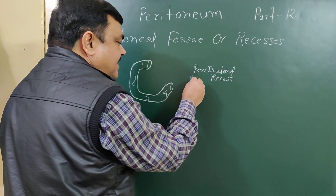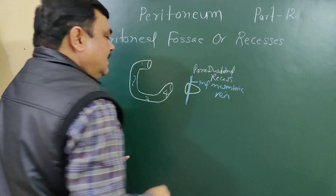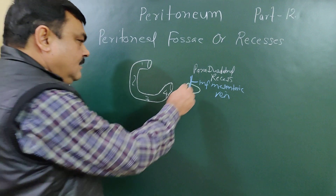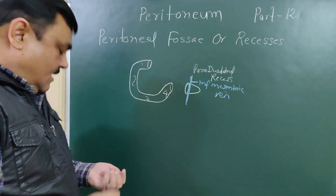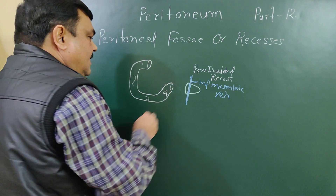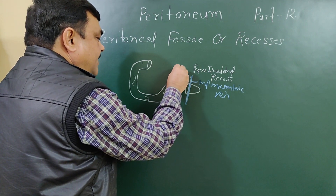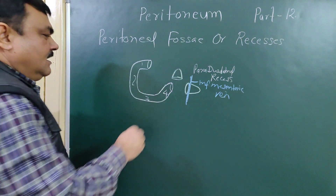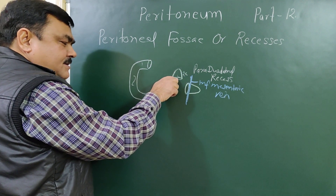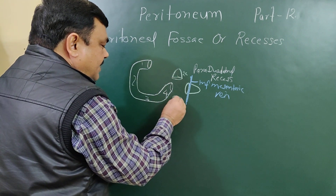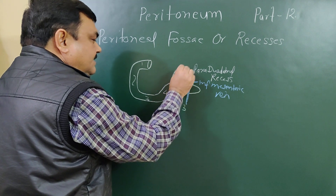The paraduodenal recess opens on the right side. One important structure — the inferior mesenteric vein — lies along the anterior margin of this opening. The recess here is the superior duodenal recess. Its depth is about two to three centimeters, and it opens downward.